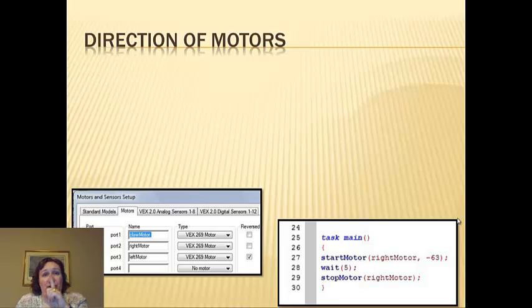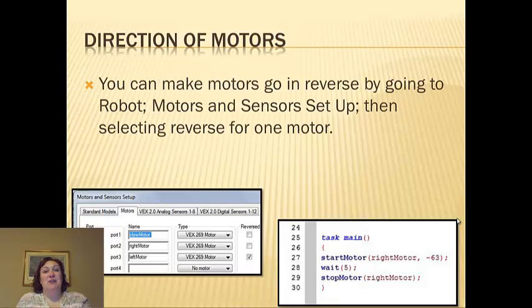Motors do not have to go in one direction. They can go backwards. So there's two ways to make a motor go backwards. You can make motors go in reverse by going to Motors and Sensor Setups, over here is a picture of what that screen looks like, and clicking the Reverse button.